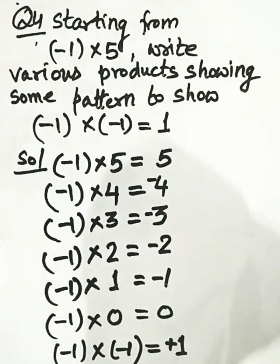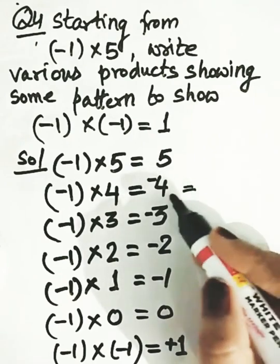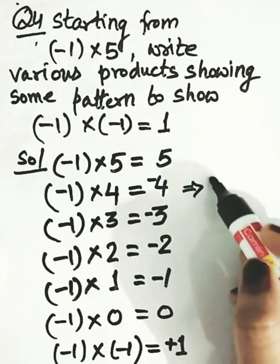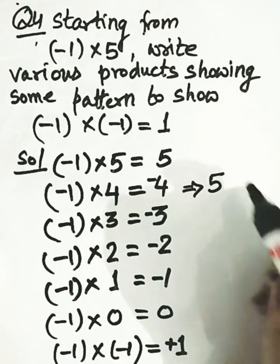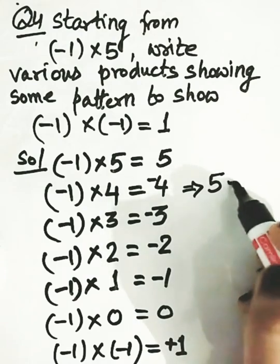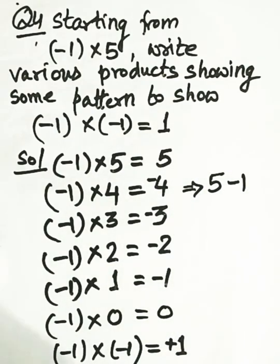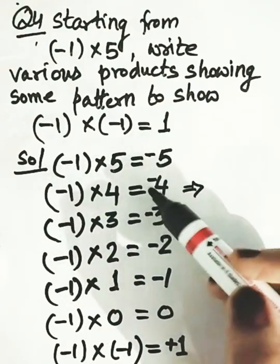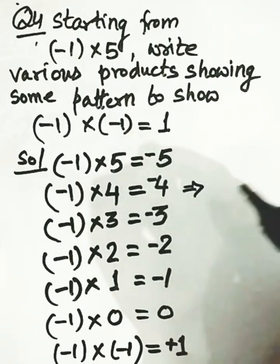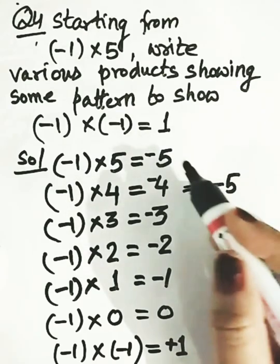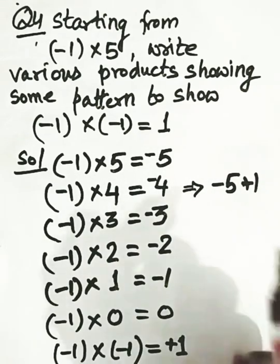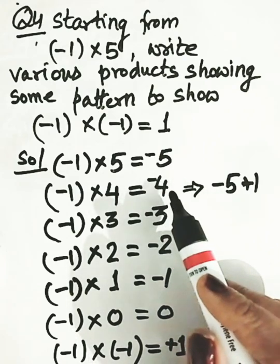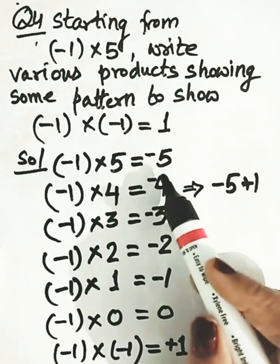Now what pattern does this show? Looking at the results: minus 4 came from minus 1 times 4. The previous product result was minus 5. In minus 5, if we add plus 1, we get minus 4. So the pattern is: each result equals the previous result plus 1. Minus 4 came from minus 5 plus 1. The larger number's sign is carried, so the pattern is adding 1 each time.